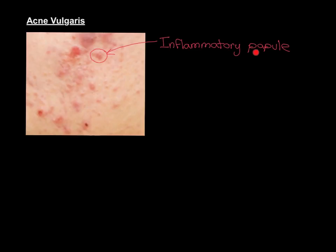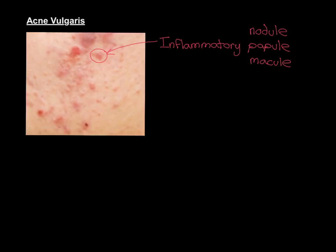In dermatology, the word 'papule' means a raised spot, in contrast to the word 'macule', which means a flat spot. If a spot is raised above the surface of the rest of the skin, that is called a papule. If it is not raised and is in line with the rest of the skin surface, that's called a macule. There is another word you should know: 'nodule'. A nodule is the same as a papule — it's a raised spot — but nodules are bigger than papules. When you have a very large raised spot, such as one greater than one centimetre in diameter, you would refer to that as a nodule rather than a papule.